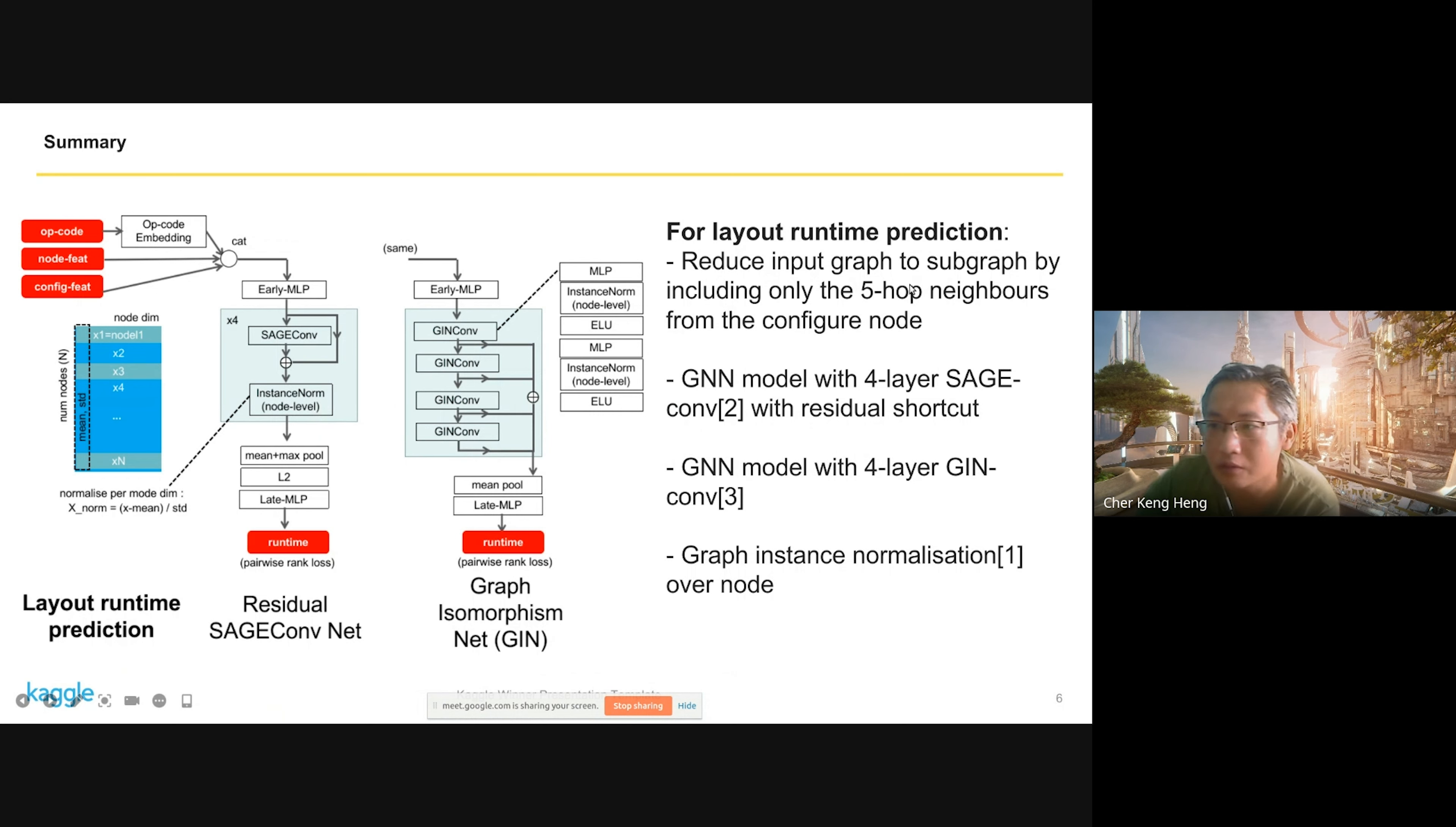Instead of inputting the whole graph, I sample only the five-hop neighborhood from the compression nodes. I tried different models, for example GraphSAGE using a four-layer model with residual shortcuts. I also tried GIN models.